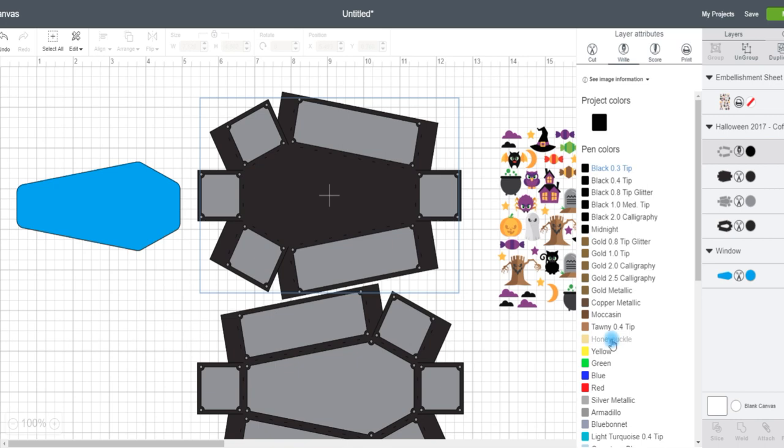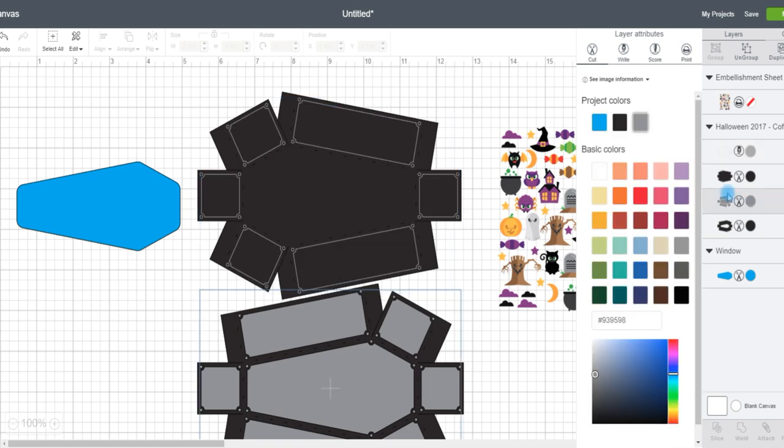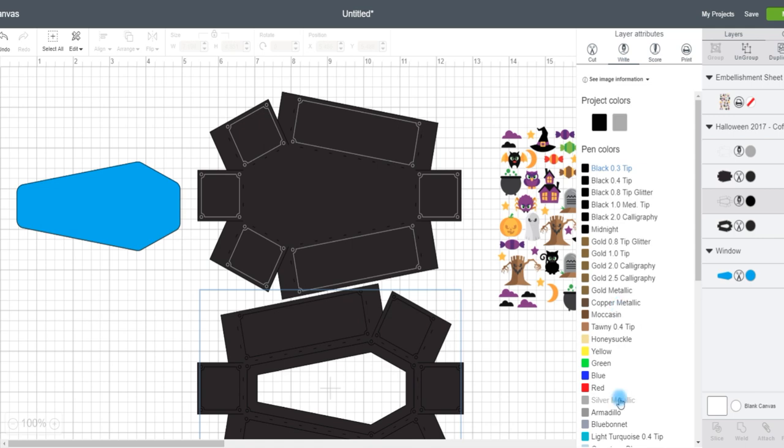To do this, select the gray layers and change the layer attributes to write. I like to use a lighter color so you can see better where your writing will be. Do the same for the other gray layer.